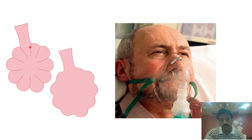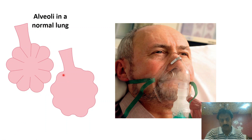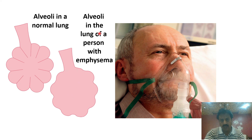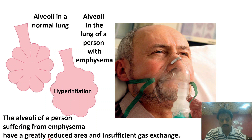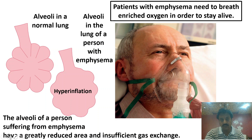یہاں normal alveoli نظر آ رہے ہیں — بیچ میں walls destroy نہیں ہوئے، بالکل normal ہیں۔ مگر emphysema میں یہ walls lost اور destroyed ہو چکے ہیں — greatly reducing the surface area for gas exchange. Insufficient gas exchange کی وجہ سے patients کو oxygen supplement دیا جاتا ہے۔ Patients with emphysema need to breathe enriched oxygen in order to stay alive.